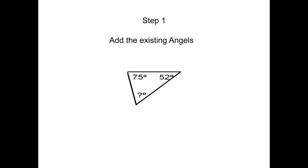How to find missing angles in a triangle. Step 1: Add the existing angles.